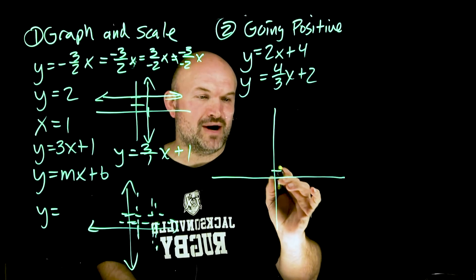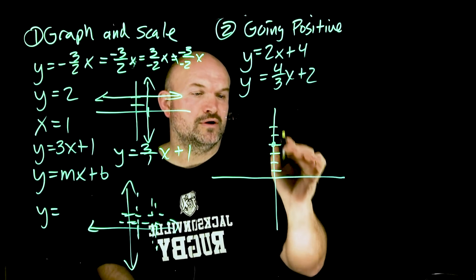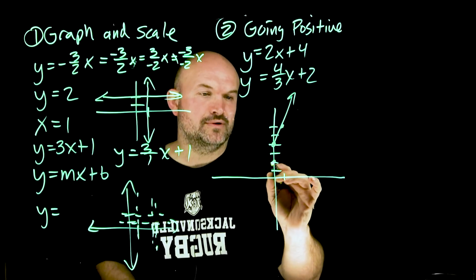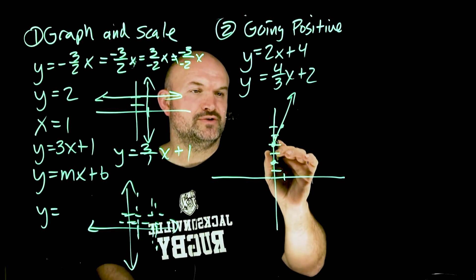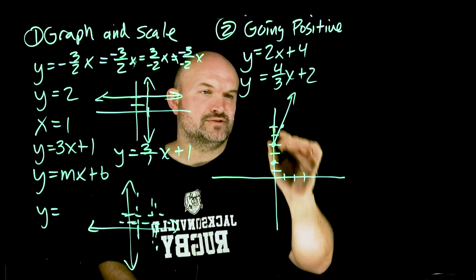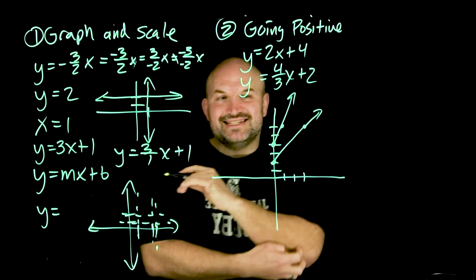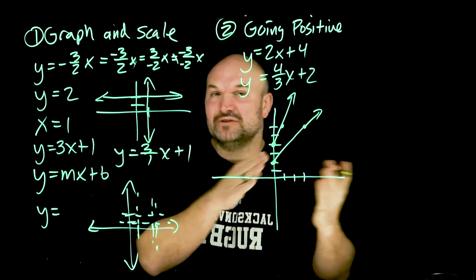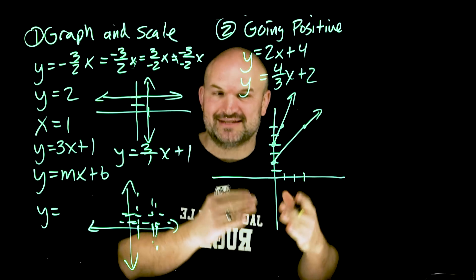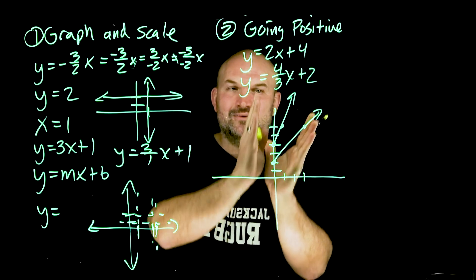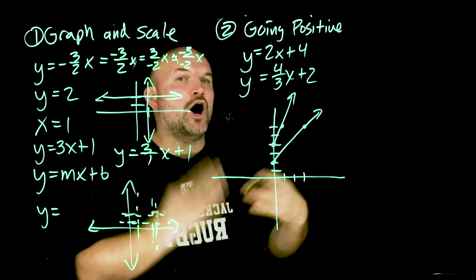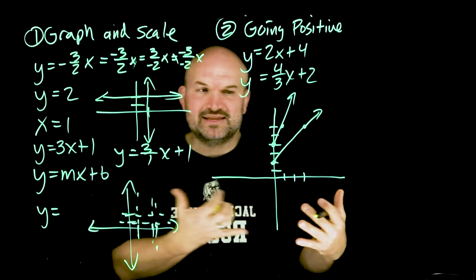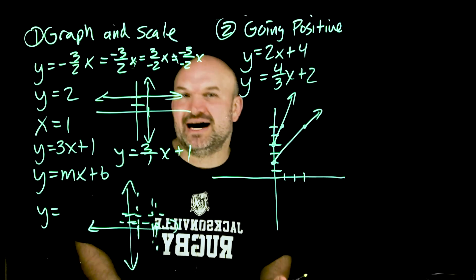If I graph the first equation, I go to my y-intercept of 4, then go up 2 over 1, giving a line going that direction. For the second equation, I have a y-intercept of 2, then go up 4 over 3. Hopefully you can see that these lines are not going to intersect going to the right. If your graph is a little off, they might look like parallel lines or might look like they'll intersect. This is why correct scaling is critically important — students always want to start going right, assuming a positive solution point.